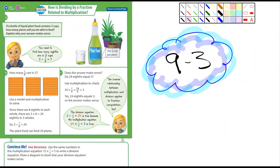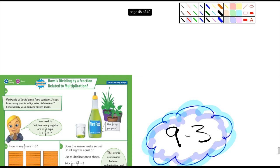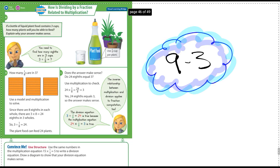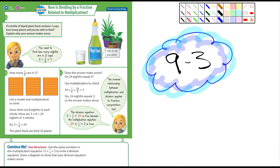Okay fifth graders, we're starting 9-3 and this is all about dividing by a fraction and how it's related to multiplication. It is related and you're going to see that here in just a moment.